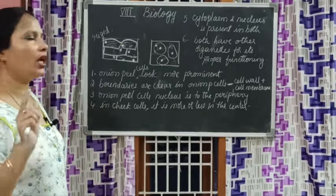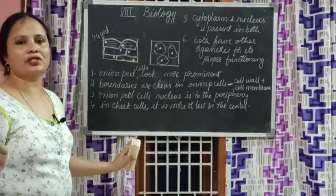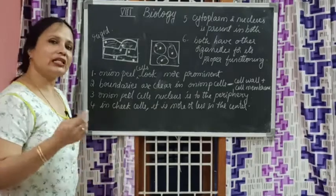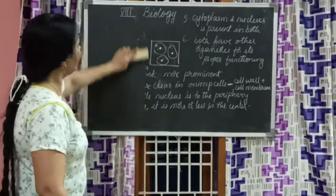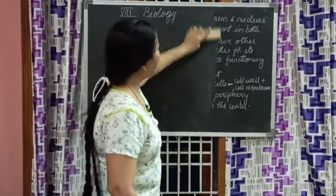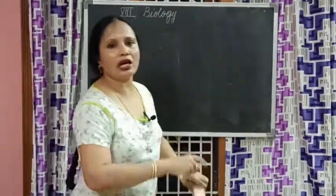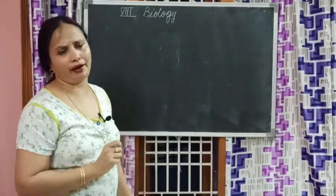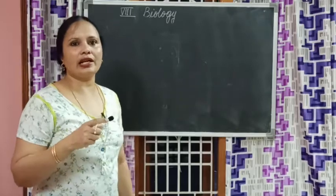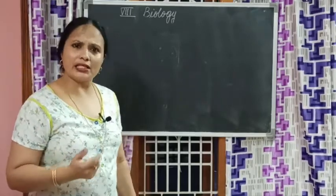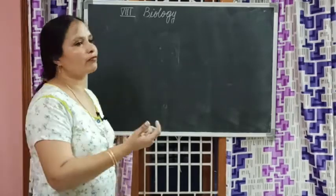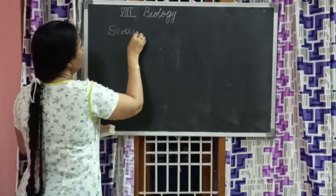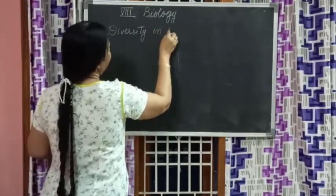Now let us learn about the diversity in cells. Cells are of negligible size - very tiny - but does that mean all cells are tiny? No. There are cells which are long, like the nerve cell. There are very tiny cells like bacteria which we cannot see with our naked eye. And there are cells we can see with the naked eye - the biggest cell is the ostrich egg. Shapes of cells are also different. This is the topic of diversity in cells.